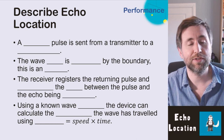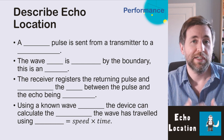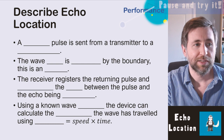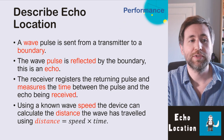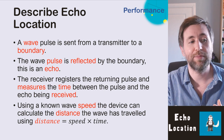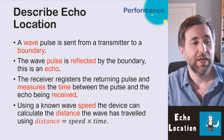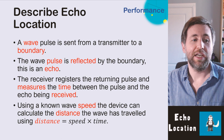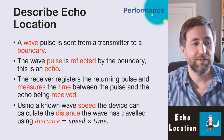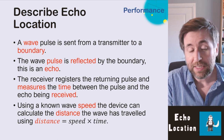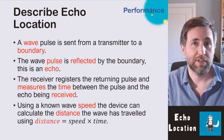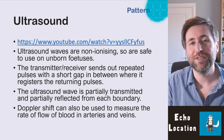Here's how to describe how echolocation works: a wave pulse is sent from a transmitter to a boundary; the pulse is then reflected at the boundary — this is the echo. The receiver registers the returning pulse and measures the time between the pulse being sent and the echo being received. Using a known wave speed, the device calculates the distance using the equation: distance equals speed times time.